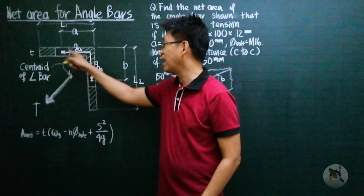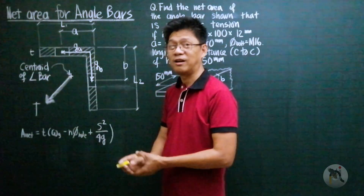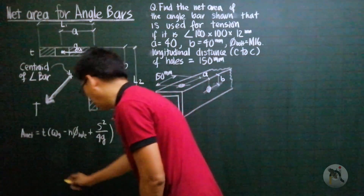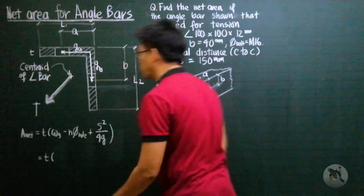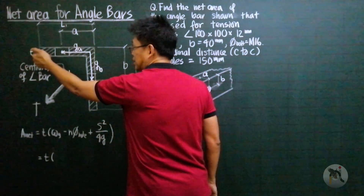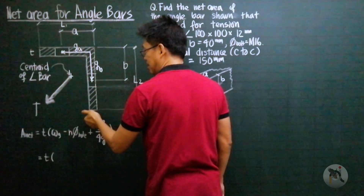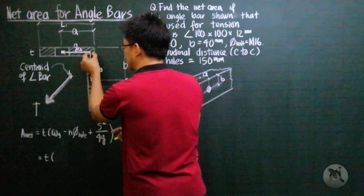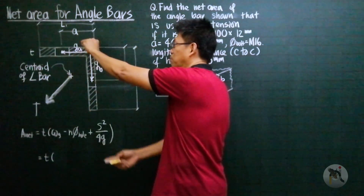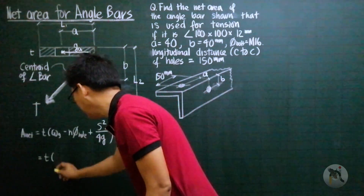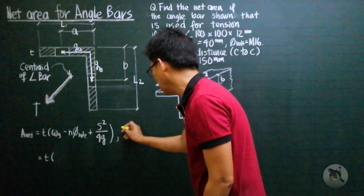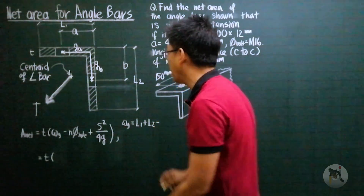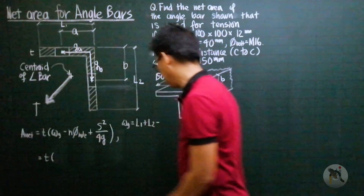So what if we have an angle bar where you have a hole here and a hole here? How do we handle it? Our thickness is t. Our gross width is from here to here — so if this is l1 and this is l2, this is going to be l1 minus t over 2, while this is l2 minus t over 2. So the gross width is l1 plus l2 minus t over 2 minus t over 2.